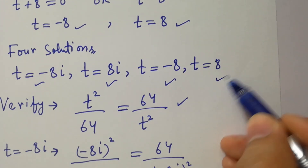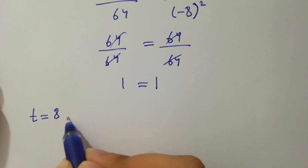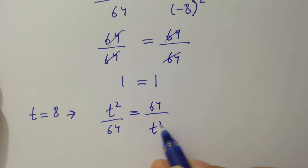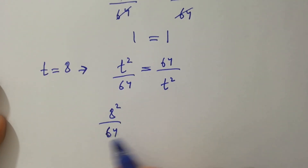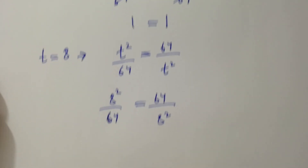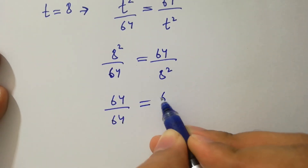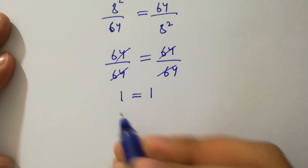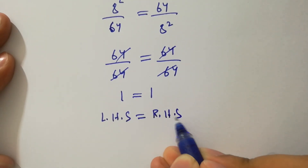For t equal to 8, substituting into t squared over 64 equal to 64 over t squared, we have 8 squared over 64 equal to 64 over 8 squared. Since 8 squared is 64, we get 64 over 64 equal to 64 over 64, which cancels to give 1 equal to 1. Left hand side equals right hand side.